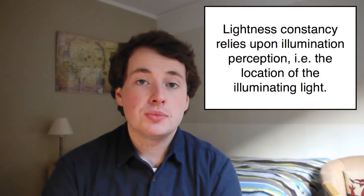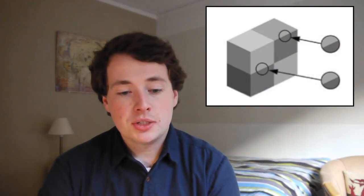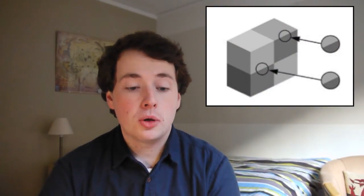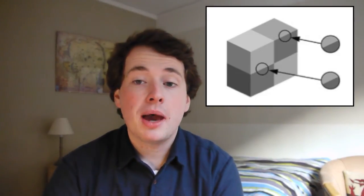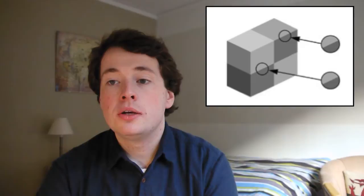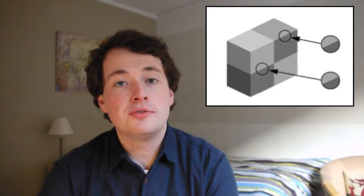By default, the visual system assumes that scenes are lit from above. As for the size constancy, this can be illustrated using a visual illusion, in this case the patterned block illusion, where the two highlighted areas have exactly the same likeness, but the side panel appears lighter than the top panel due to the brain's assumption that the block is illuminated from above.